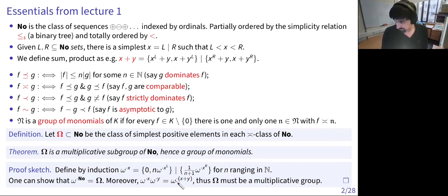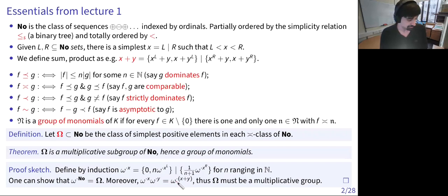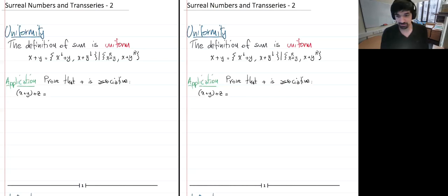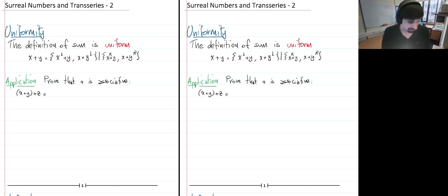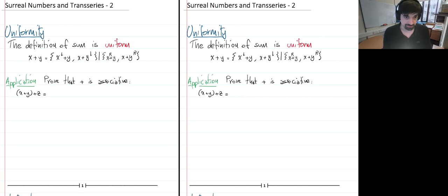Now I'm going to do something technical about surreal numbers — this is still low level. I'm doing this because maybe we have brushed away too many details, and we would like students to have the chance of actually completing some of these proofs. One thing that is nice, and it applies to many of these inductive constructions, is that they are uniform.